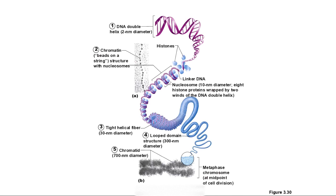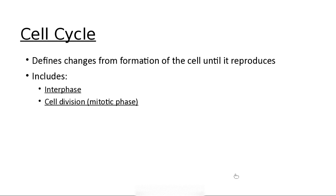This cell has already duplicated the DNA, so we have sister chromatids — this chromatid and this chromatid are exact copies of each other. Now the cell cycle of reproduction: we're not talking about sexual reproduction, we're talking about somatic cells. The cell cycle consists of interphase and then mitosis.